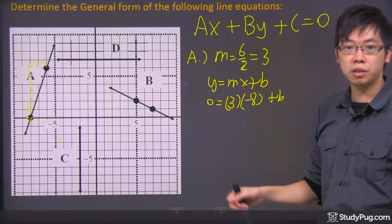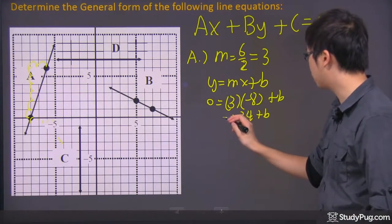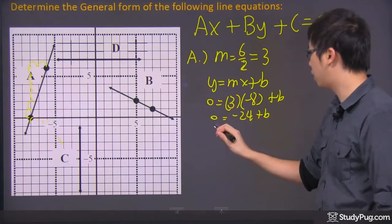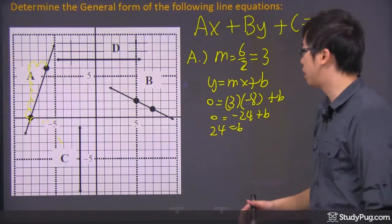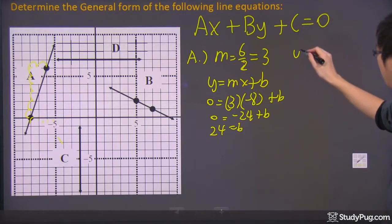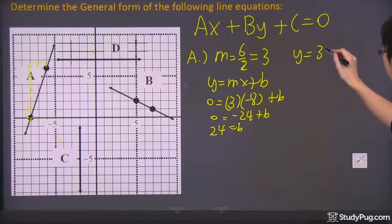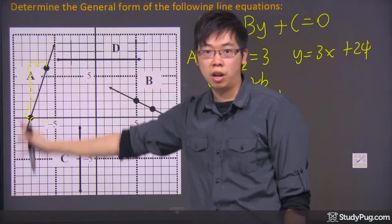So negative eight times three is actually negative 24. And if you bring it over to the other side, guess what's going to happen? It's going to give you that 24 equals to the B. So that means this equation here is now going to look like this: Y equals to 3X plus 24. So that's the slope and the Y-intercept equation for my line number A right here.